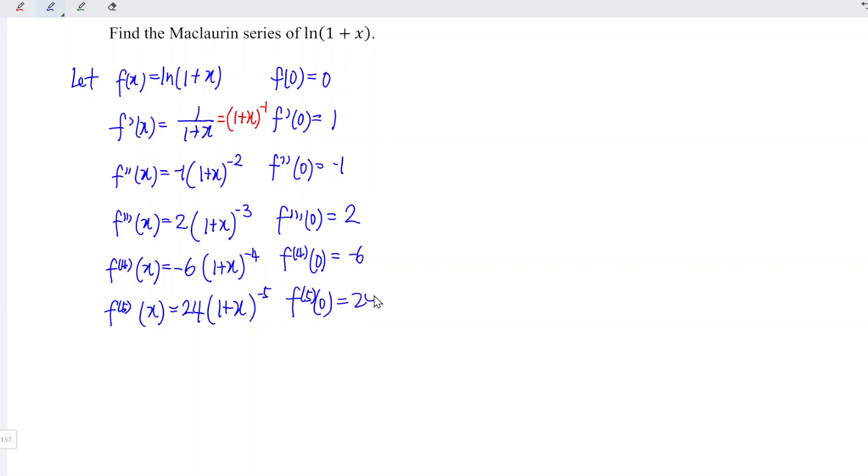we have 24. Since we have obtained the first through fifth derivatives evaluated at 0, I'm going to build the Maclaurin series now.